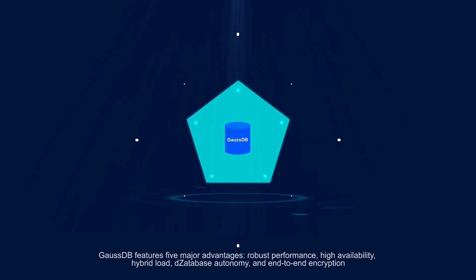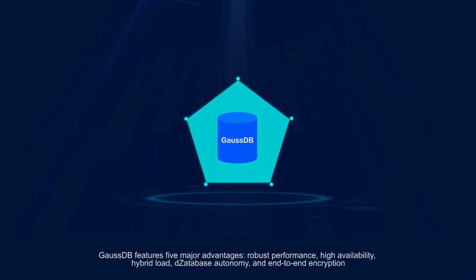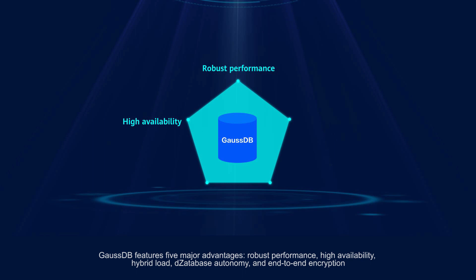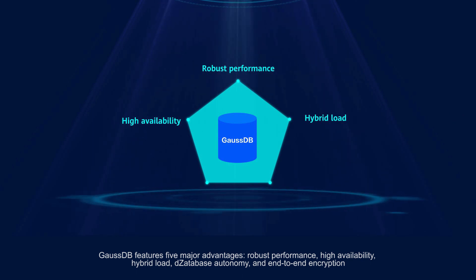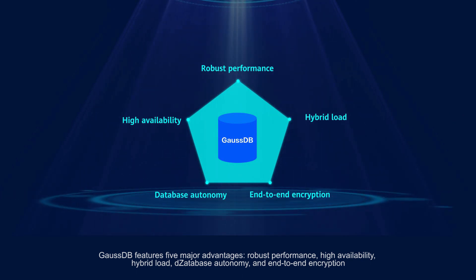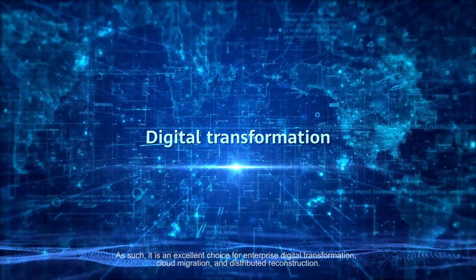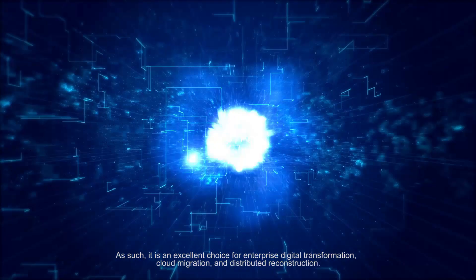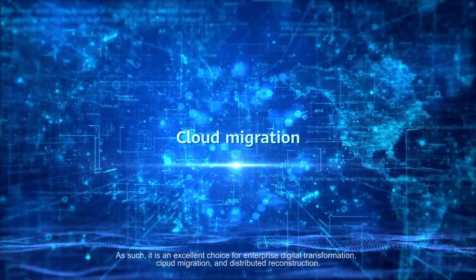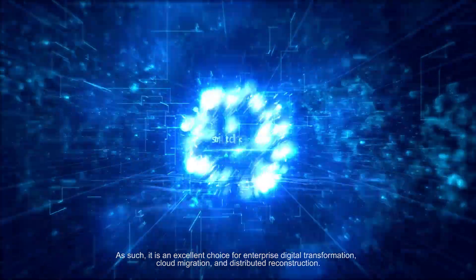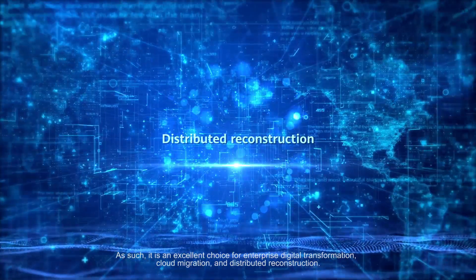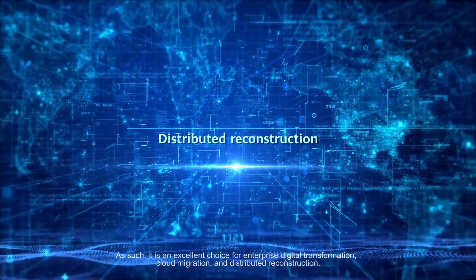GaussDB features five major advantages: robust performance, high availability, hybrid load, database autonomy, and end-to-end encryption. As such, it is an excellent choice for enterprise digital transformation, cloud migration, and distributed reconstruction.